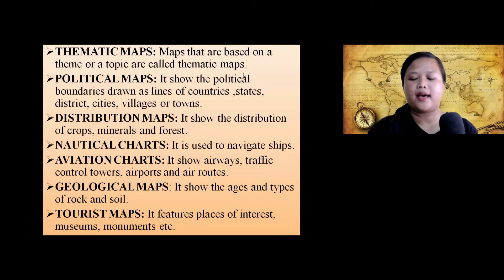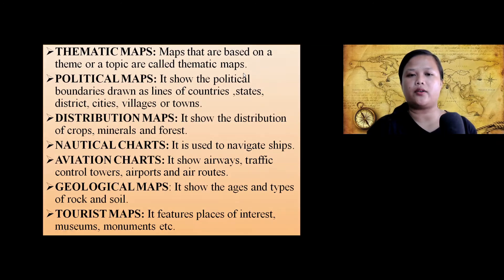Next is political maps. Political maps show the political boundaries drawn as lines of countries, states, districts, villages, or towns. Distribution maps show the distributions of crops, minerals, and forests.